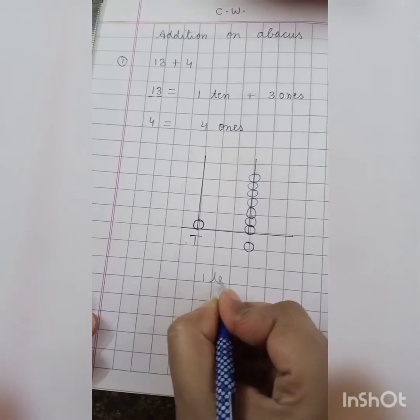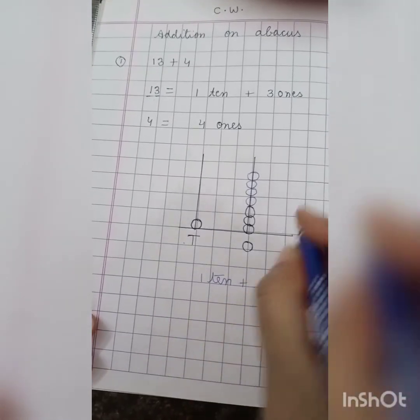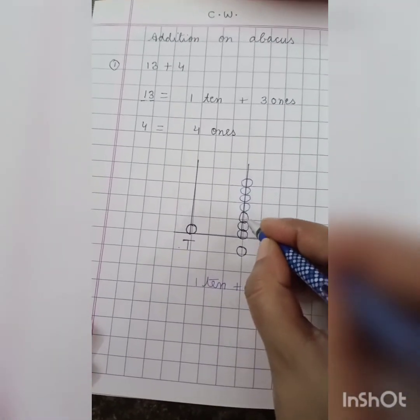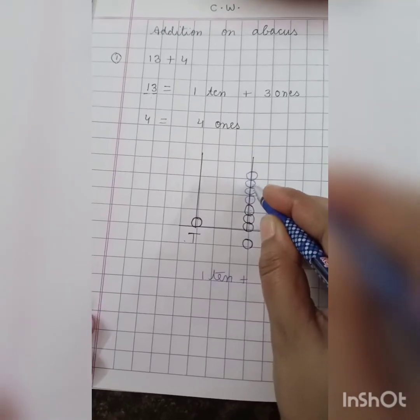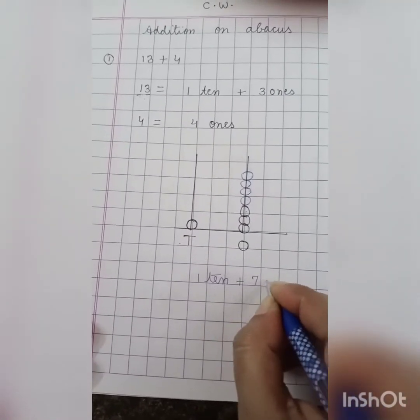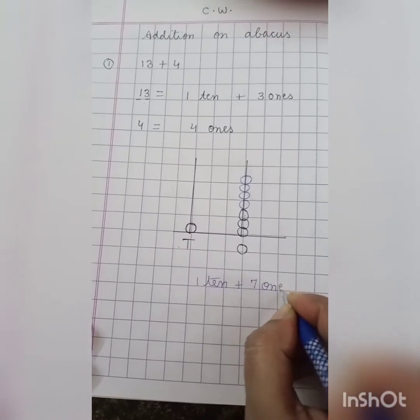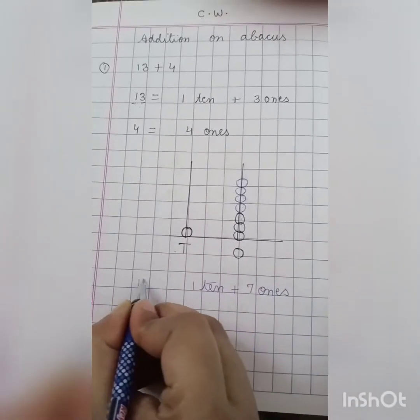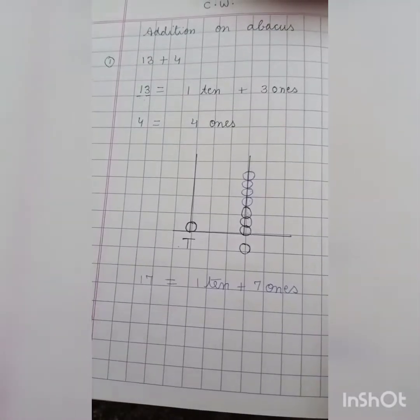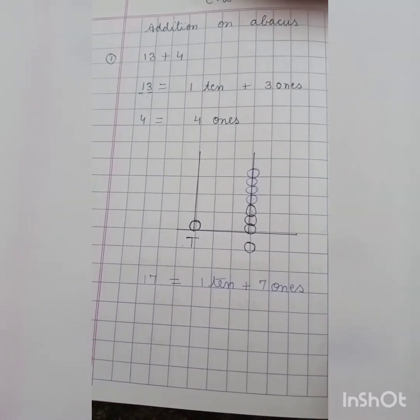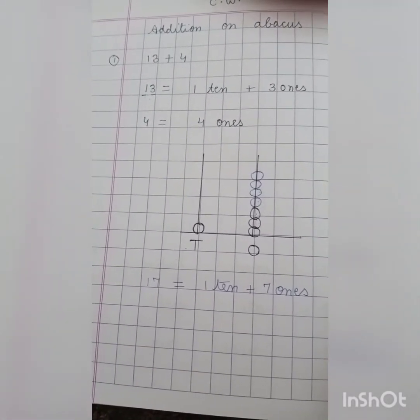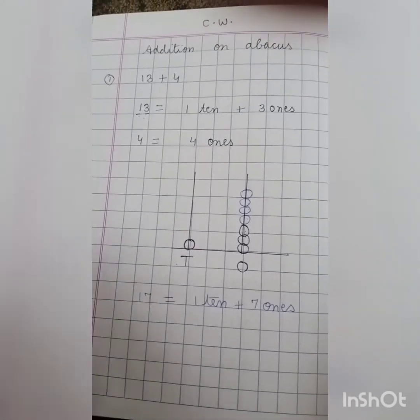1 ten plus how many ones? 1, 2, 3, 4, 5, 6 and 7 ones, 7 ones. So which number is this? This is number 17 and our answer is also 17. Children, do you get it?